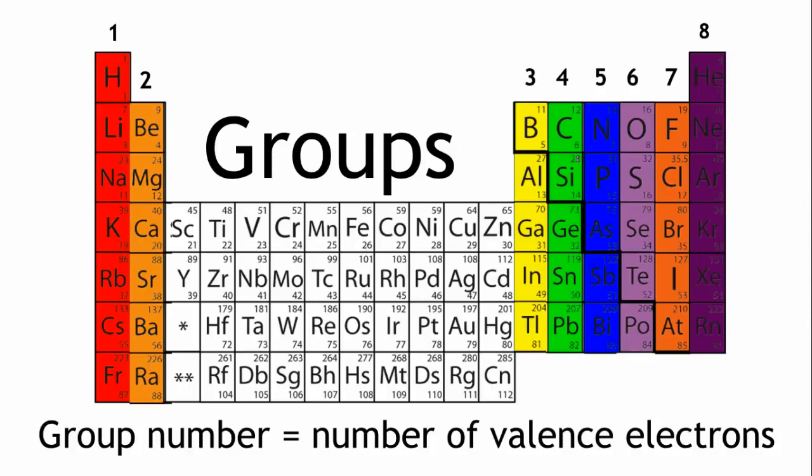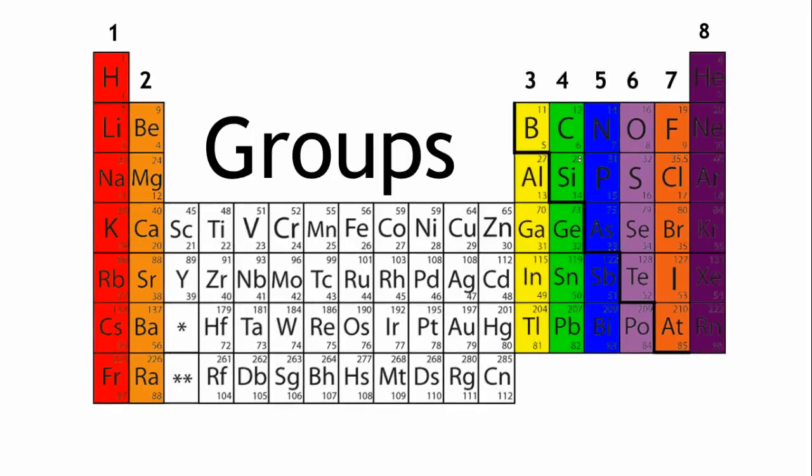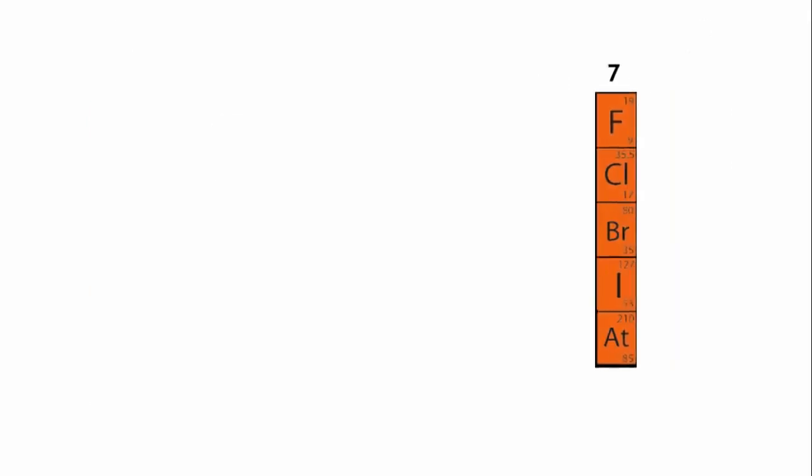The number of electrons in the outer shell governs elements' reactivity, which is why elements in the same group have similar properties. The group number can tell you how many electrons are in this shell. For example, let's look at group 7.